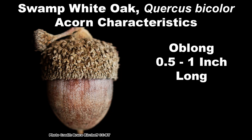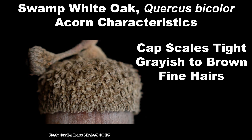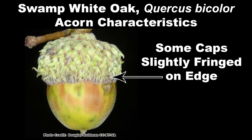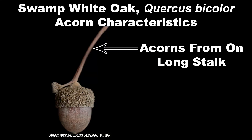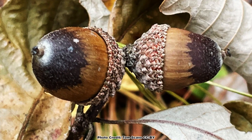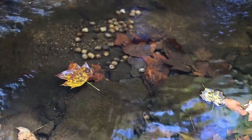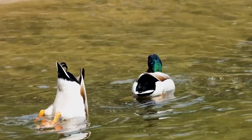Swamp white oak acorns vary in size from around half an inch to a little over an inch long, are oblong, and have caps that cover one-third to half of the nut. Caps have tight gray to brown scales and are covered with fine hairs, and some caps will be slightly fringed along the edge. Acorns form on a long stalk and ripen to a light to dark brown, starting to drop in September and October when they are eagerly sought out by wildlife and birds, including waterfowl.